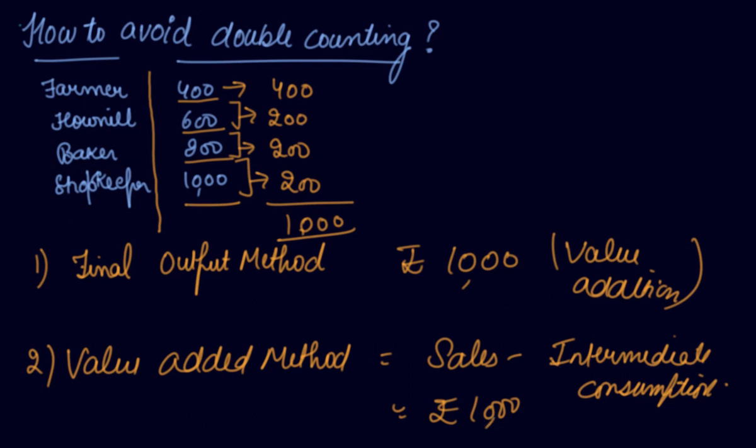So either you can choose the final output method or your value added method in order to avoid your double counting problem in the value added method.